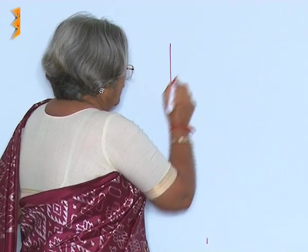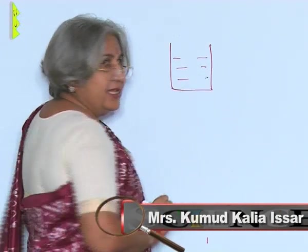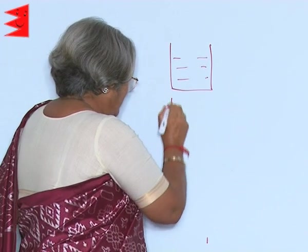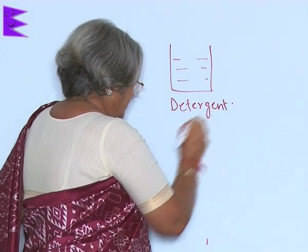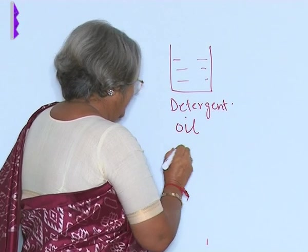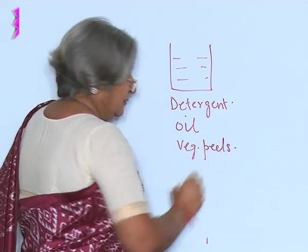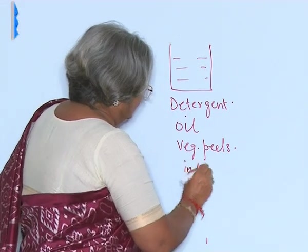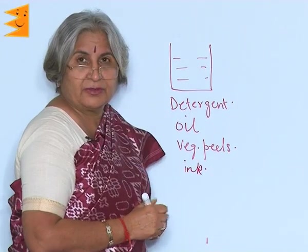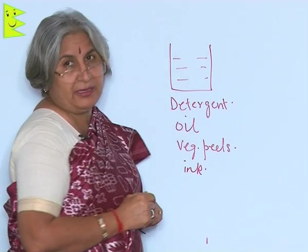For this experiment, you take water in a big beaker and to this you can add a little of detergent, some oil, vegetable peels, and you can even add a little of ink or whatever waste you think can be added to this beaker.